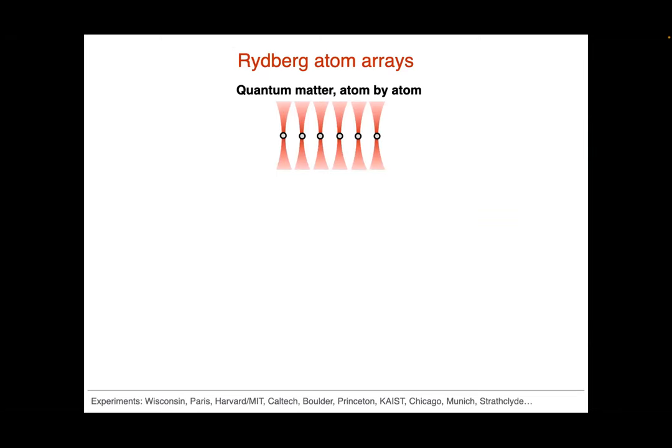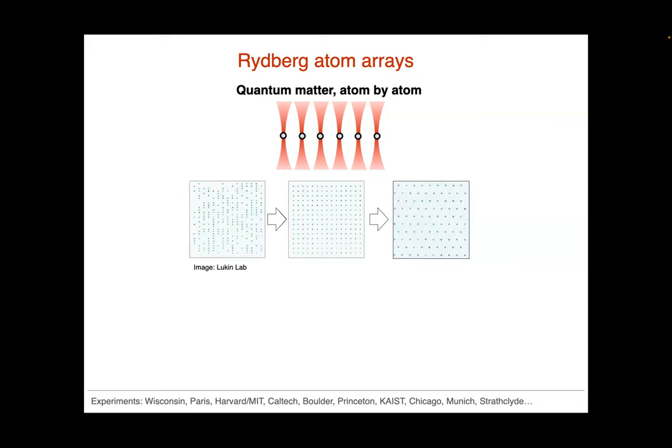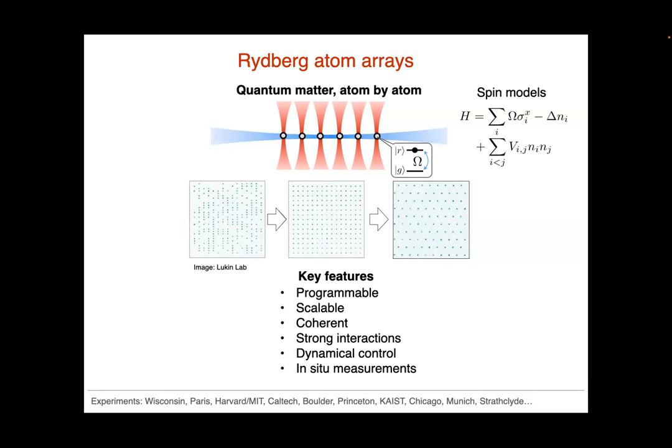The setup is we're talking about Rydberg atom arrays arranged in two dimensions. Interesting physics happens here because you can excite these atoms to Rydberg states and realize spin models. These Rydberg atom arrays have a long list of very unique, nice features: programmable atom positions, scalability, very strong interactions, and dynamic in-situ measurement capabilities.